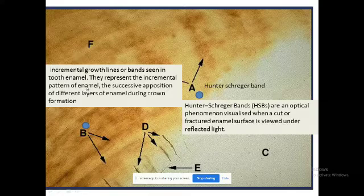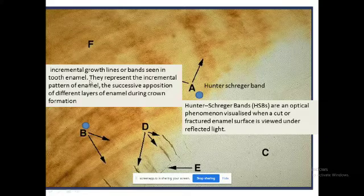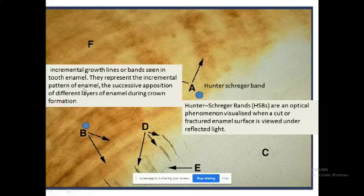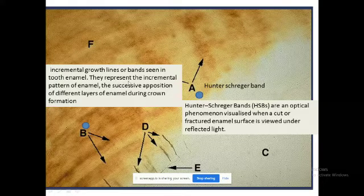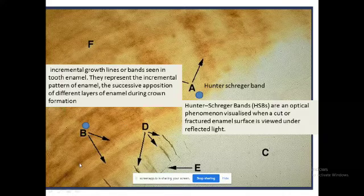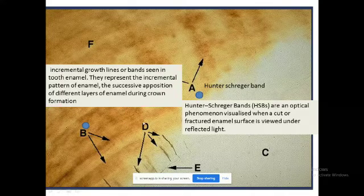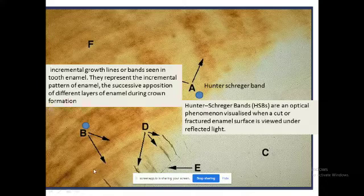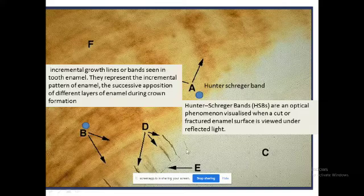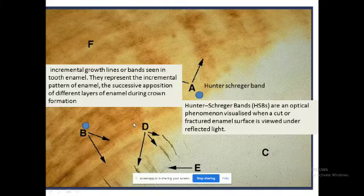Then our question was incremental lines of Retzius and Hunter-Schreger bands left with us. Incremental lines of Retzius are hypomineralized structures and also these are representing the incremental pattern of enamel that is laid down in successive apposition of different layers at the time of amelogenesis. As we can well appreciate, circumferential dark and light lines are appreciated by this point B arrow running along the dentino-enamel junctions.